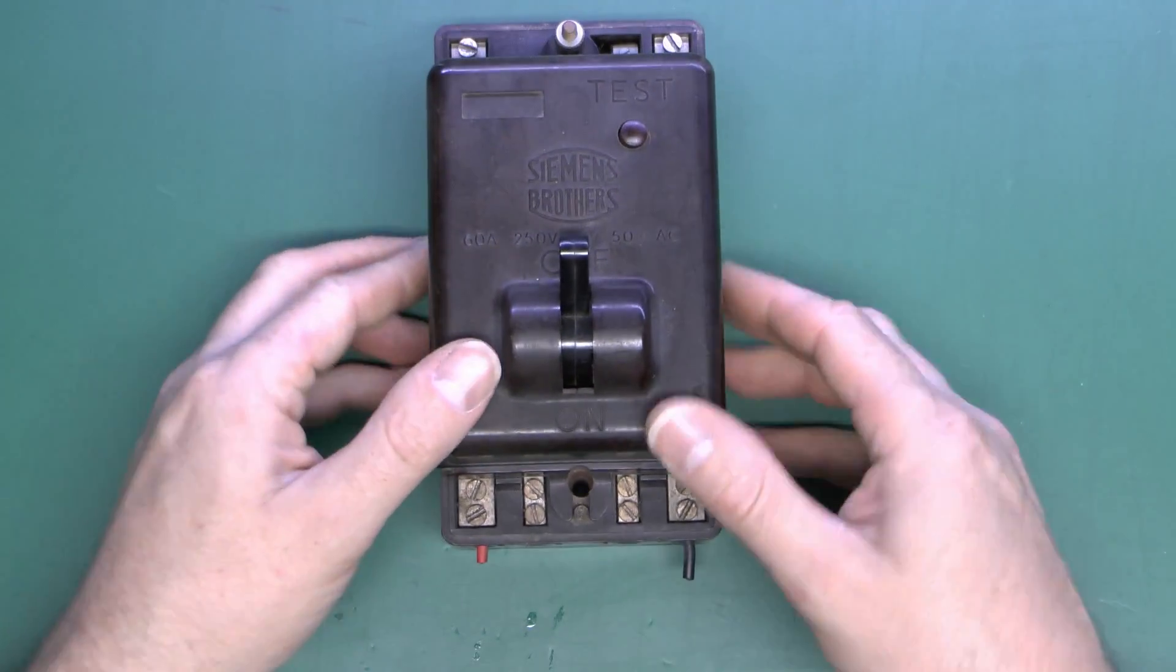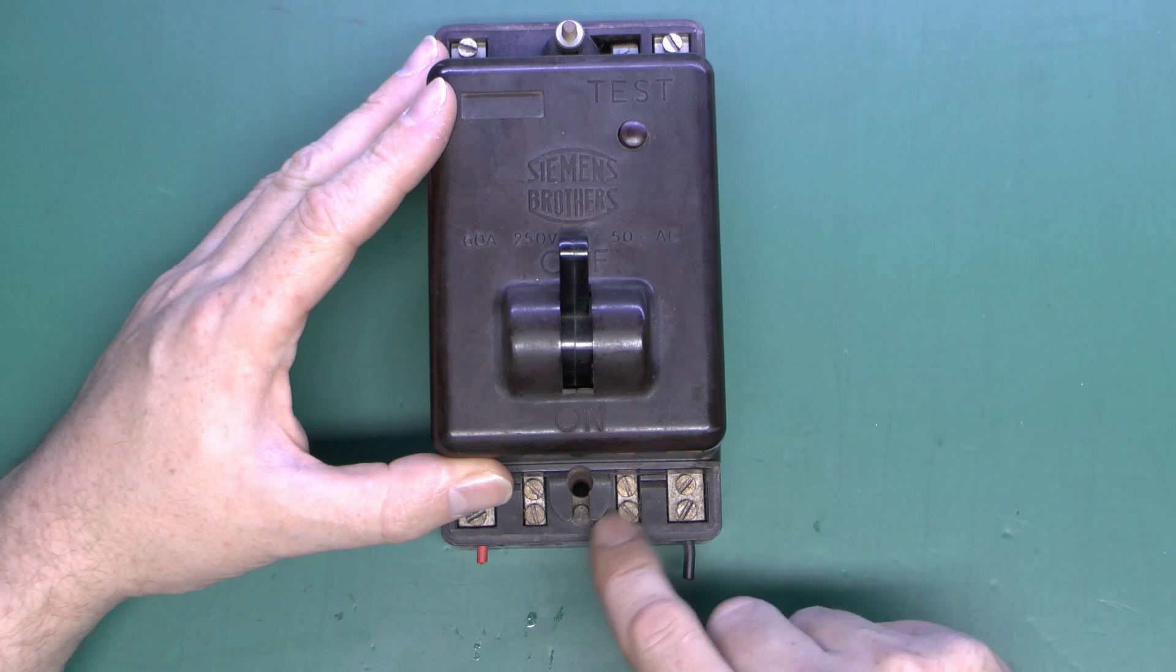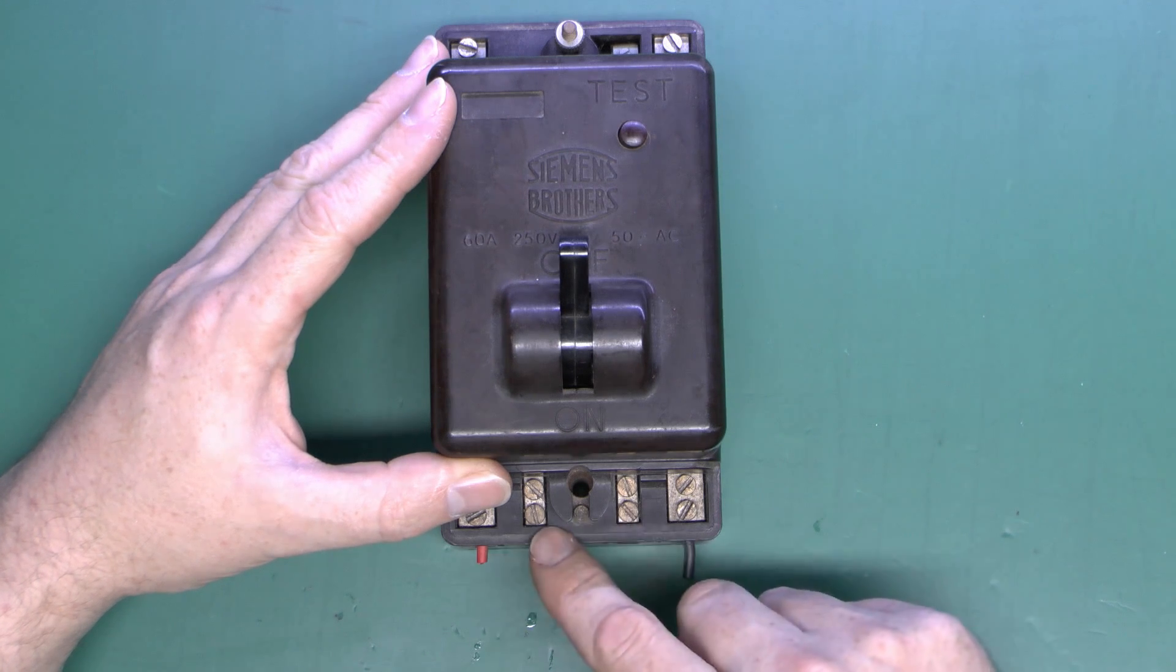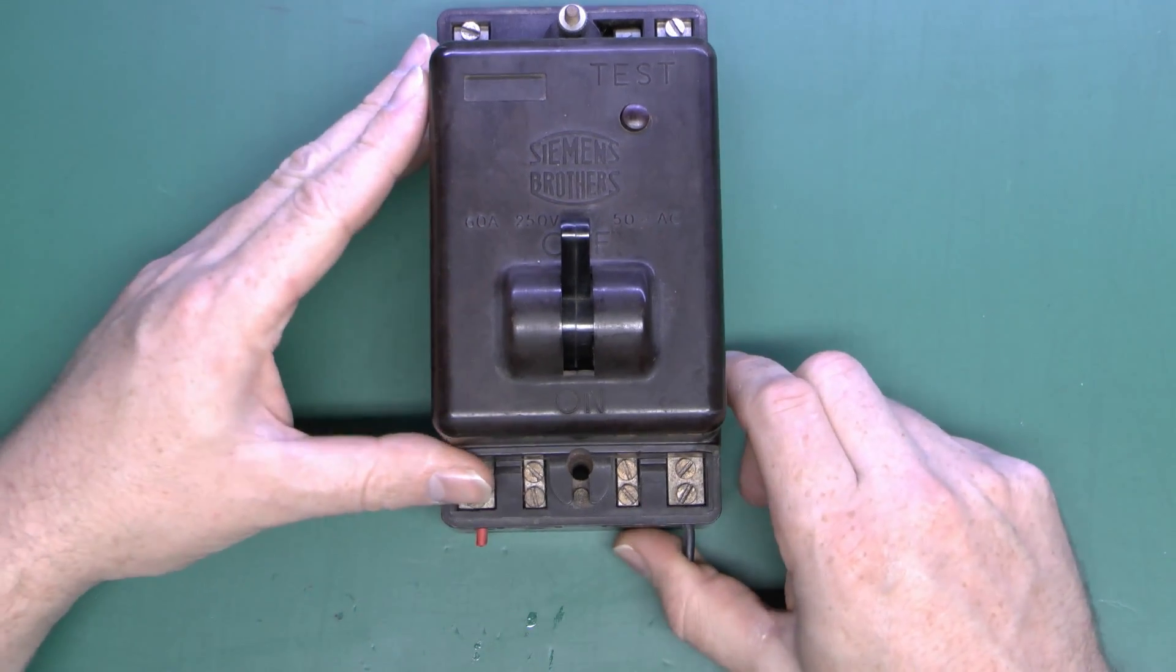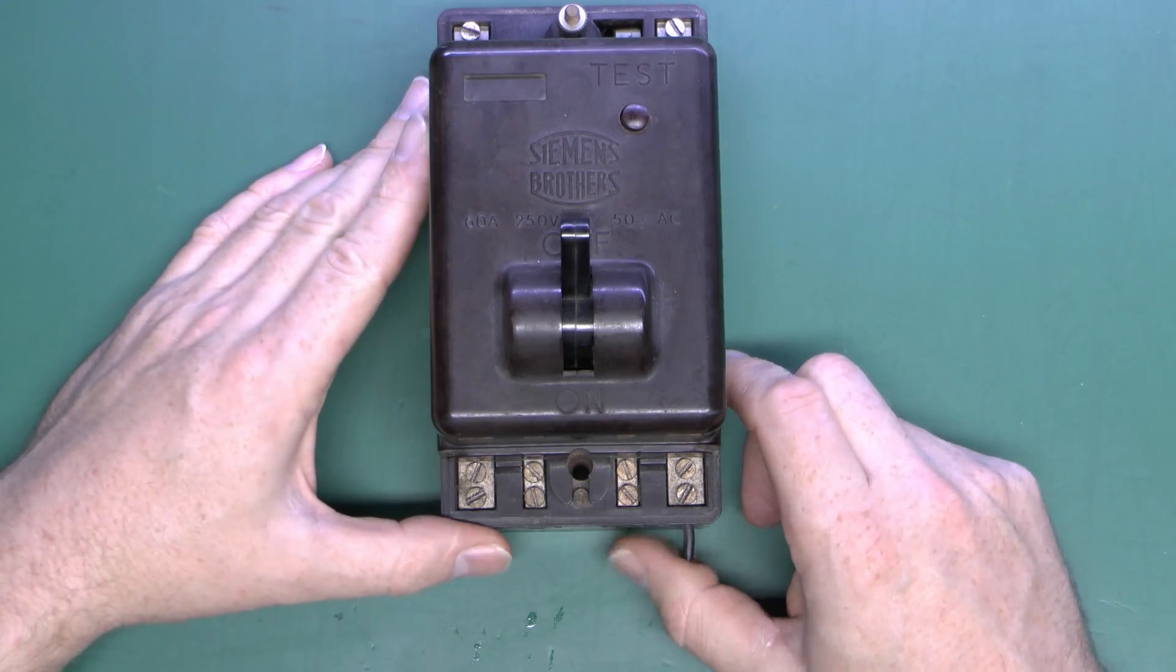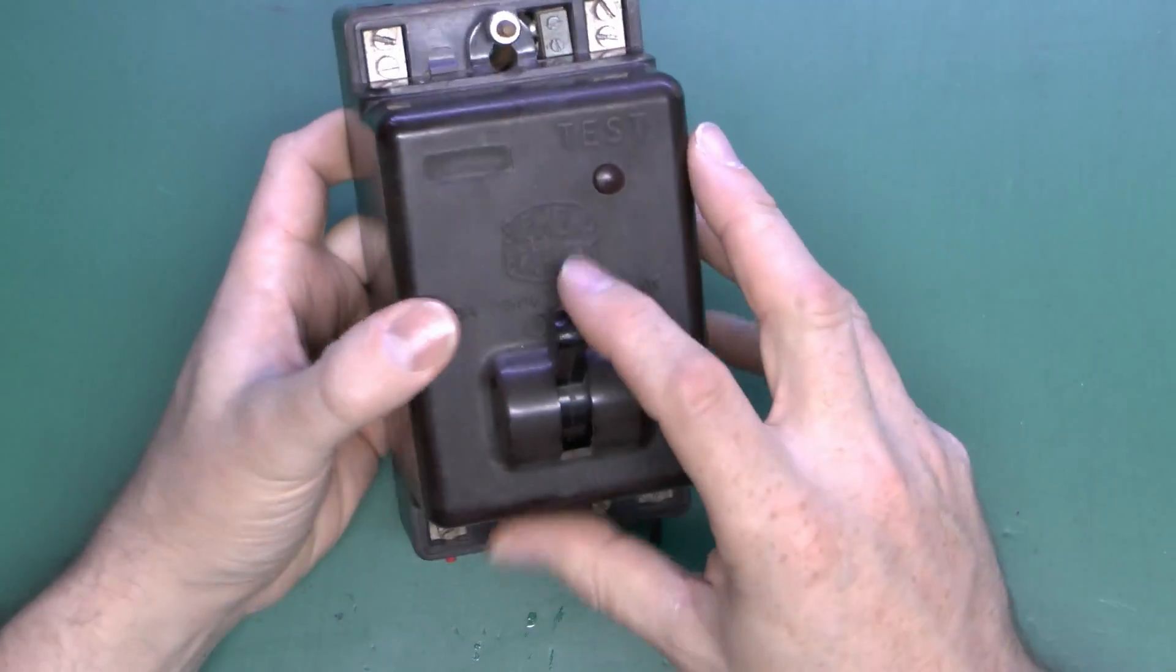Your earth rod connects to one of these and the installation to the other. As in the other videos, these things trip when the voltage between these two terminals exceeds about 50 volts, and that would occur if there was a fault to earth somewhere in the installation.